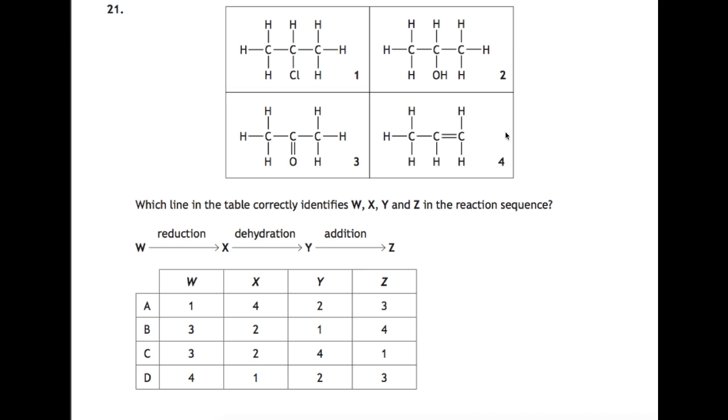If you have a look at Y, that straight away gives you the answer as being C, but we'll just check that that fits. So Y is this one with a double bond here. If we go backwards, we must have dehydrated to get to Y, which means we must have had an alcohol. So X must be 2, and that fits in the table.